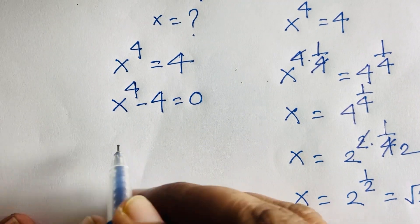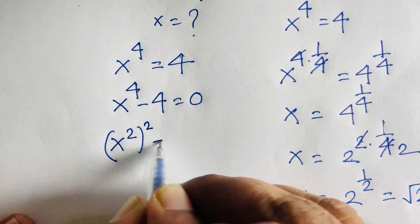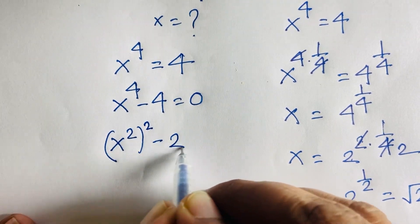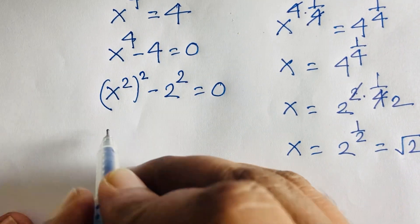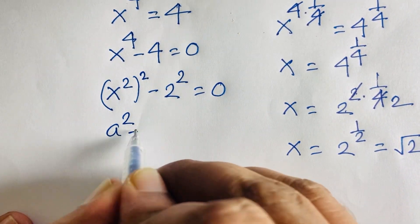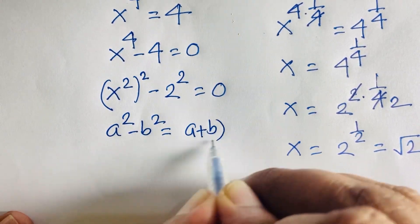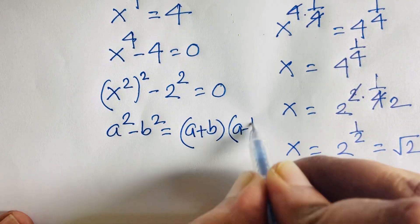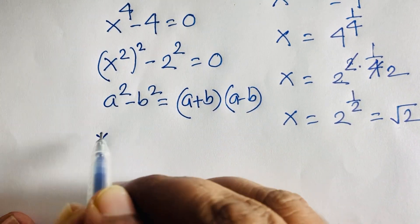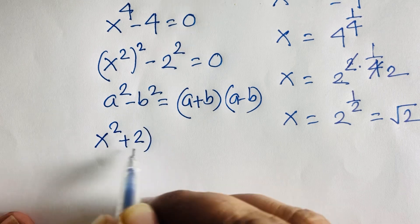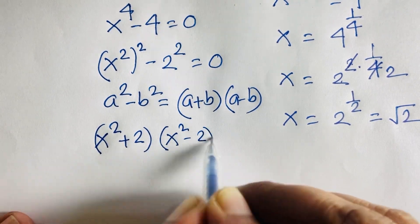This equation becomes x squared, whole squared, minus 2 to the power 2 is equal to 0. We know that a squared minus b squared is equal to a plus b times a minus b. According to this rule, it will be x squared plus 2 times x squared minus 2 is equal to 0.